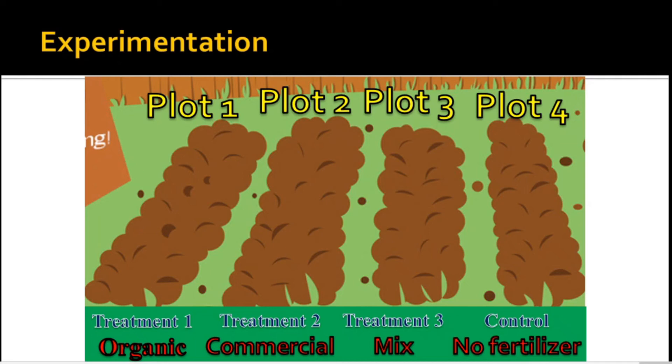For example, the soil composition of the four plots must be the same. They should be exposed to the same amount of sunlight or receive the same amount of water. We do this because we are only interested in comparing the effects of the varying fertilizers to the growth of petchai.